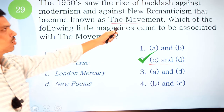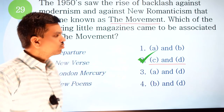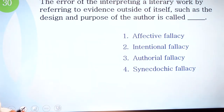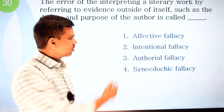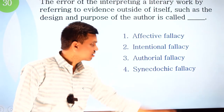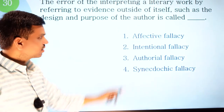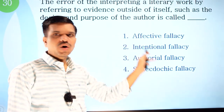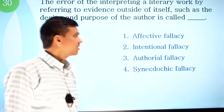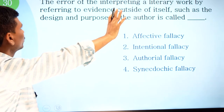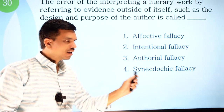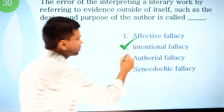Question 30: the error of interpreting a literary work by referring to evidence outside of itself, such as the design and purpose of the author, is called what? Options are: affective fallacy, intentional fallacy, authorial fallacy, and synagogic fallacy. The answer belongs to either affective fallacy or intentional fallacy. Concentrating on 'interpreting' with reference to the author's purpose, the correct option is the second — intentional fallacy.